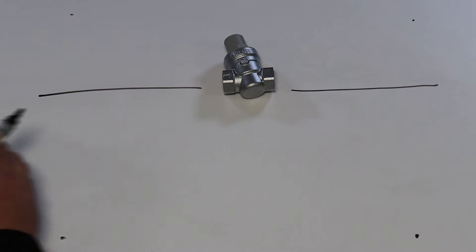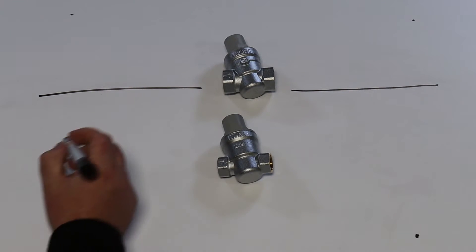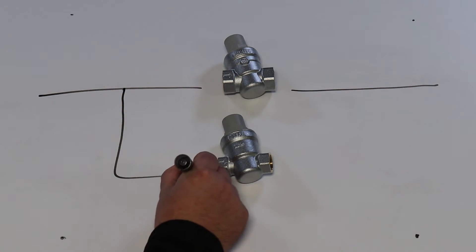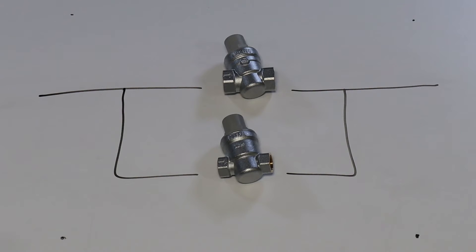So the way we overcome that is to install what we call a bypass PRV or a low demand PRV. And we simply pipe this valve as a bypass. So we're bypassing the larger valve now, and we're gonna take all that lower demand through the smaller valve.